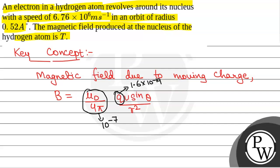Then v, the velocity of the electron, is given as V equals 6.76 times 10 to power 6 meters per second, sin theta.